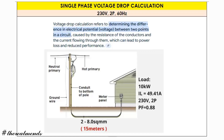Welcome to our new learning. This time we have another topic which is single-phase voltage drop calculation at 230 volts, 60 Hz. Voltage drop refers to determining the difference in electrical potential or voltage between two points in a circuit, caused by the resistance of the conductors and current flowing through them.